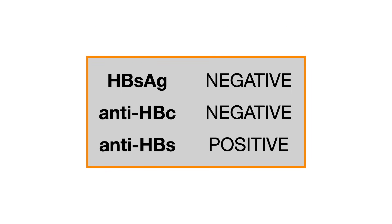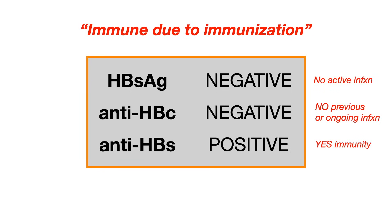What about this example? We've got a negative surface antigen, a negative core antibody, and a positive surface antibody. The person is immune, and they're immune not due to natural infection but due to immunization. Their surface antigen is negative, so there's no active infection. Their core antibody is also negative, so there's no previous or ongoing infection. But their surface antibody is positive, which tells you they're immune. If you have a negative core antibody but a positive surface antibody, that immunity must have been derived from immunization and not natural infection. This is actually very, very high yield. When you see this combination, this is immunity due to immunization.